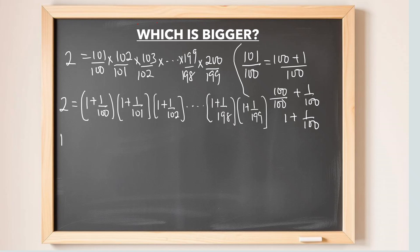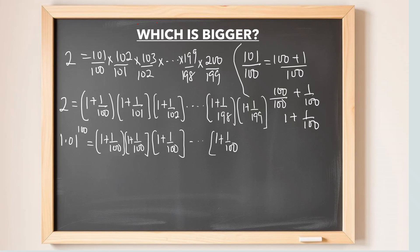Recall that from equation 1, 1.01 to the power of 100 equals 1 plus 1 over 100, multiplied by itself 100 times. Now, comparing this with equation 2 for the value 2, I have 1 plus 1 over 100 repeated in equation 1, but in equation 2 the denominators vary: 100, 101, 102, up to 199. Which of these factors is greater?